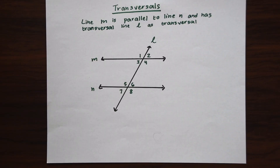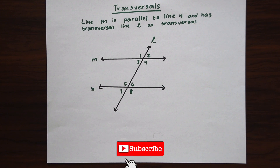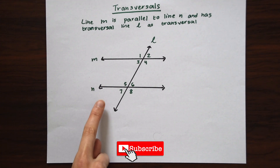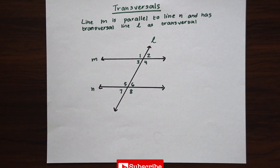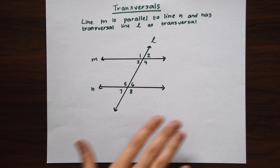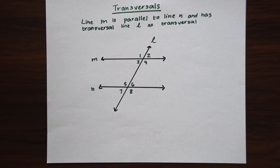So when two parallel lines are cut by a diagonal, this line is otherwise known as a transversal — it looks something like this. Notice line M is parallel to line N, and when all these lines come together they form different angles numbered 1 through 8. There are several different types of congruent relationships that happen here, and we're going to look at each of them.